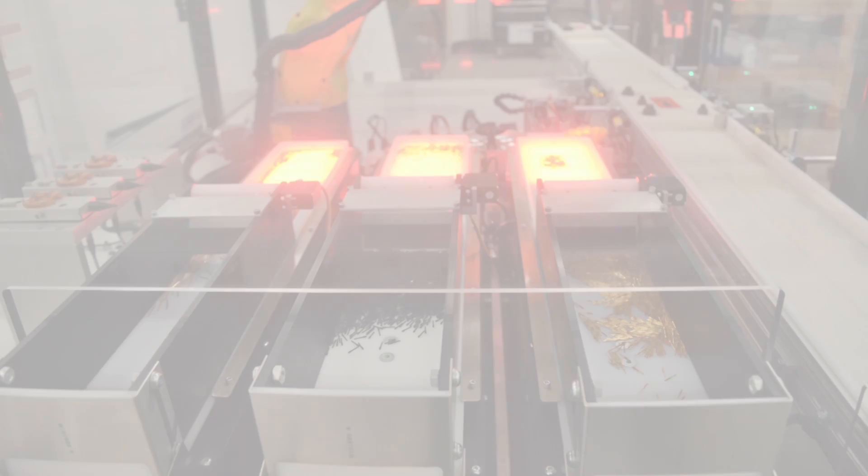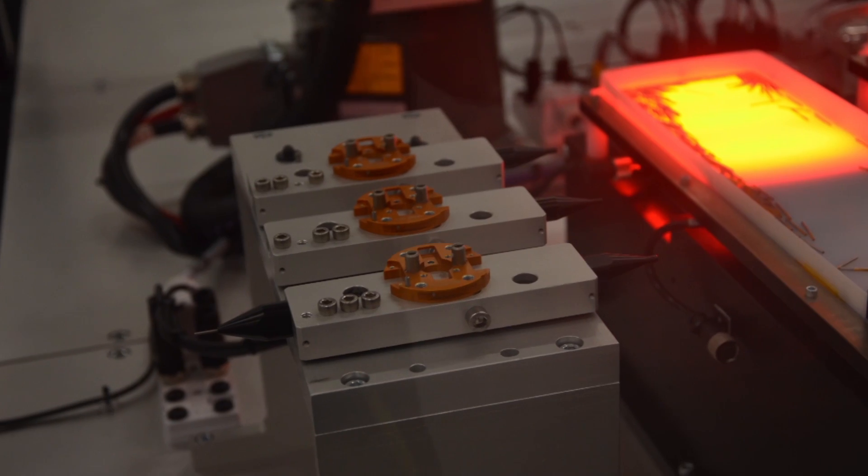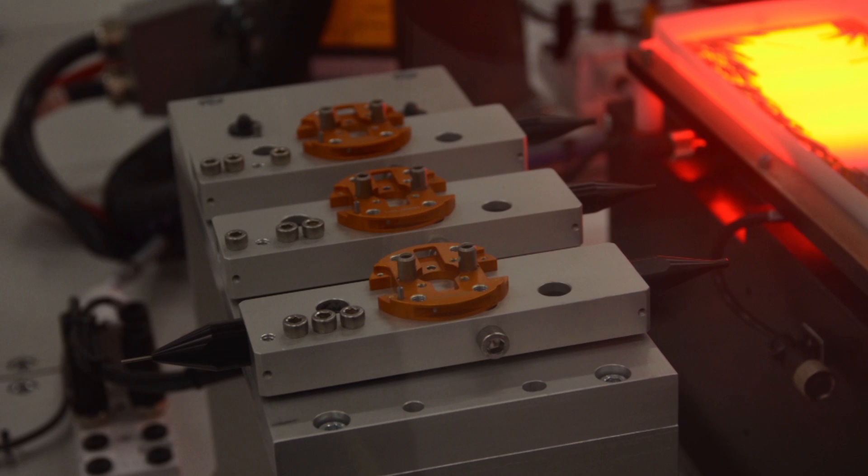This system has three shaker table feeders, but Durabotix can expand it to six feeders, all of which can hold one or more parts and can advance, retract, flip, or spread the parts.